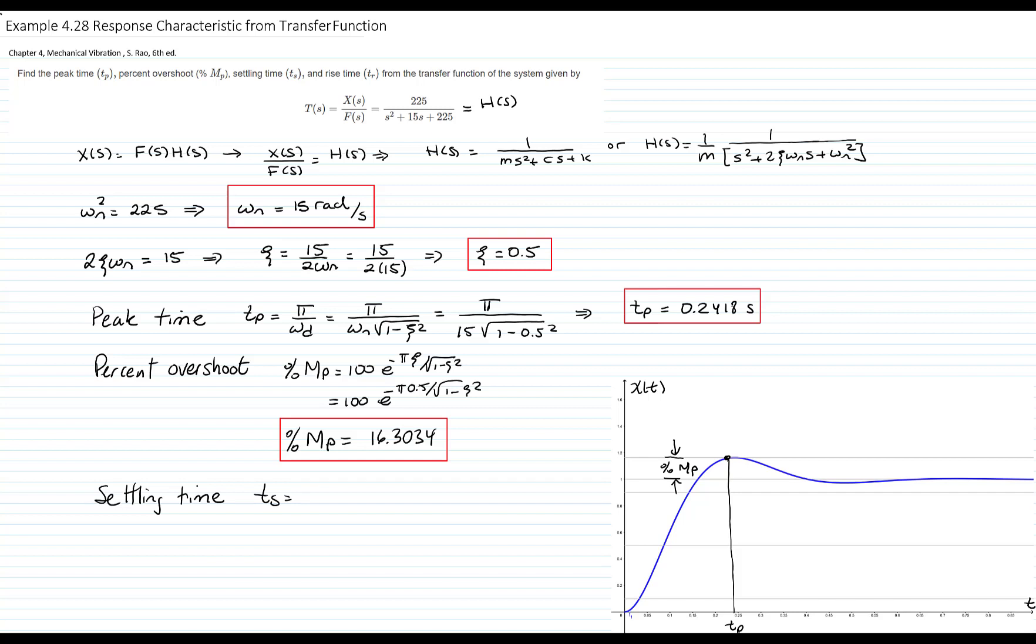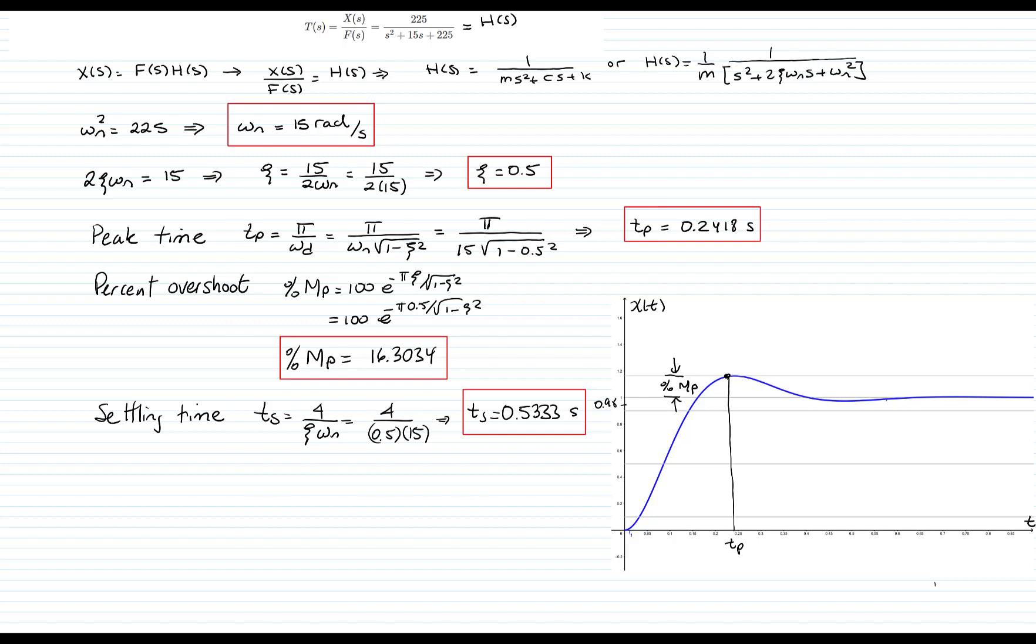And the settling time, which is that the time that the system reaches plus or minus 2% of the steady state value, will be equals to 4 over zeta omega n. Then I input the values, and I get a settling time of 0.533 seconds. So if this is 0.2 of the steady state response, then this will be the settling time over here.